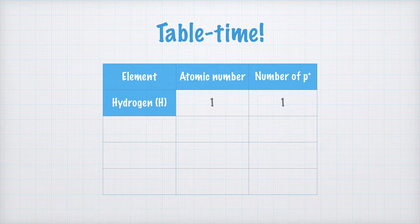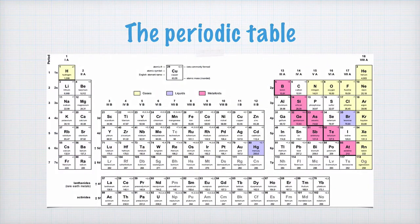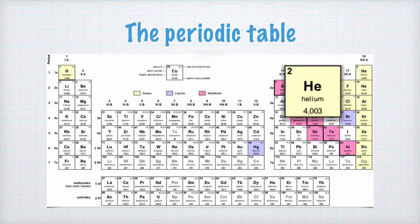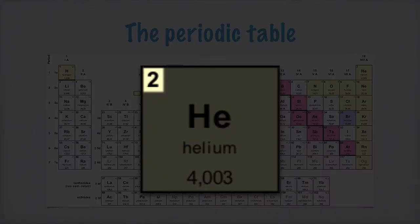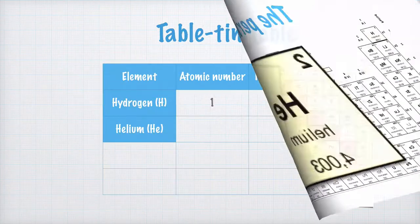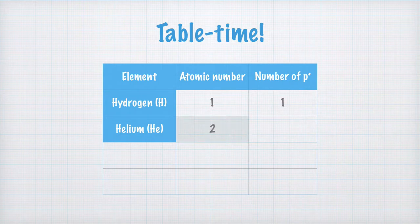Here's another example: helium. We check our periodic table, and we see that helium is up here to the right. If we enlarge it a little bit, we can directly see that the atomic number for helium is 2. That is what we write in our table too. The number of protons is equal to the atomic number: 2.